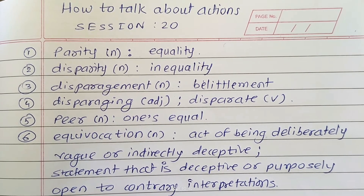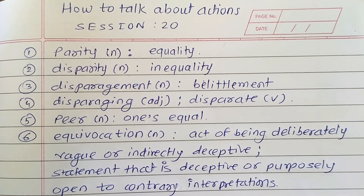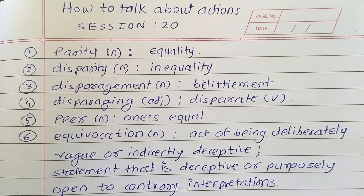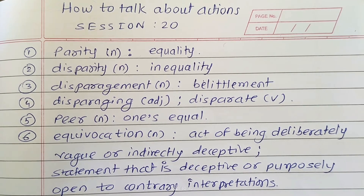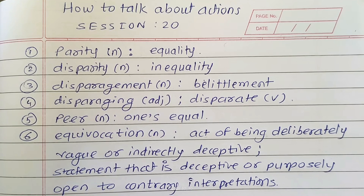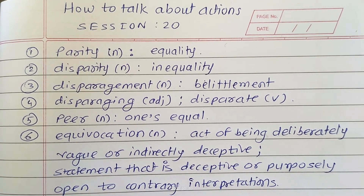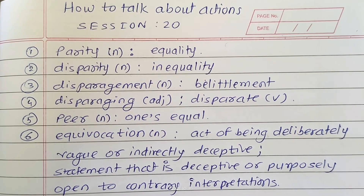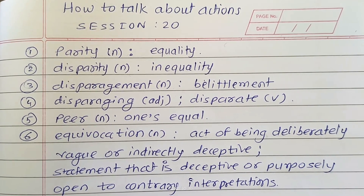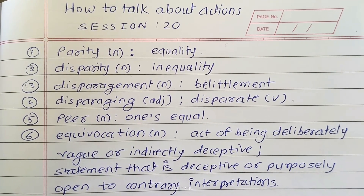Parity means equality. Here, 'par' means equal and '-ity' is the noun suffix. My next word is disparity, meaning inequality. Here, 'dis-' is a negative prefix, 'par' means equal, and '-ity' is the noun suffix — so disparity means inequality.